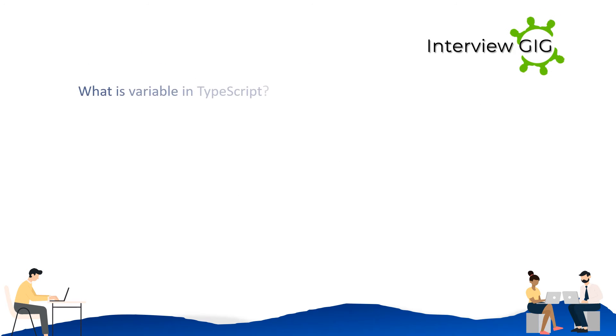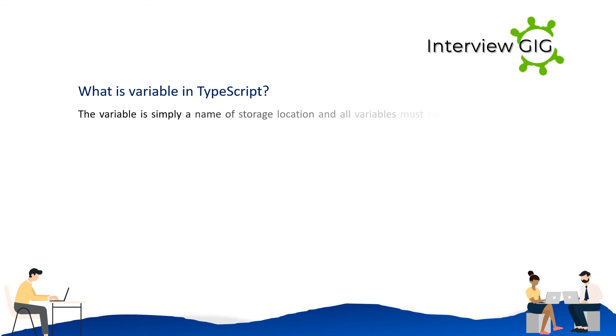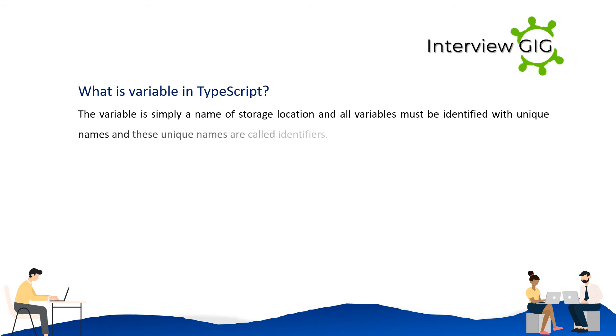What is a variable in TypeScript? A variable is simply a name of a storage location. All variables must be identified with unique names, and these unique names are called identifiers.